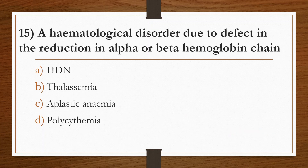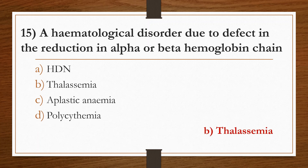Fifteenth question: a hematological disorder due to a defect in the reduction of alpha or beta hemoglobin chain. Option A: HDN. Option B: Thalassemia. Option C: Aplastic anemia. Option D: Polycythemia. Answer is Option B, Thalassemia.